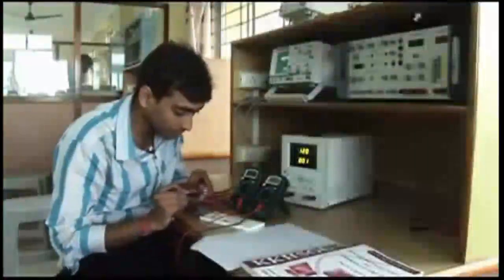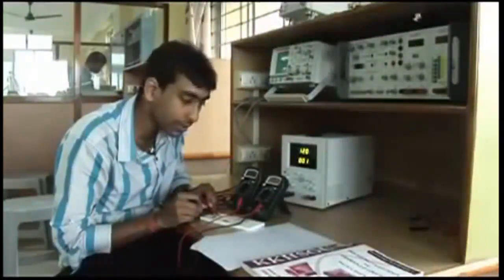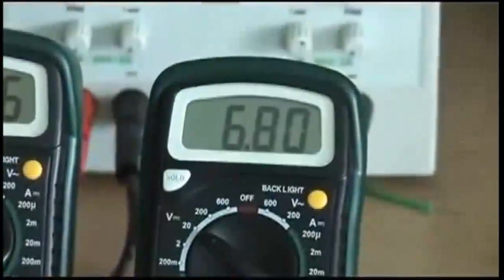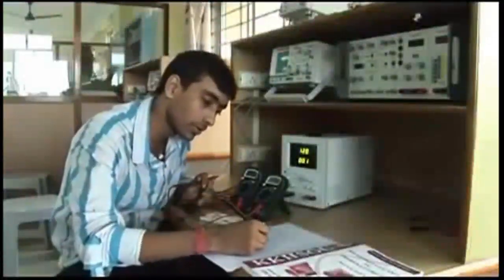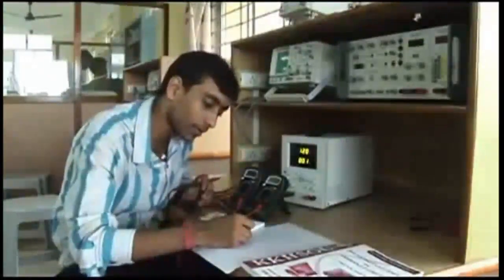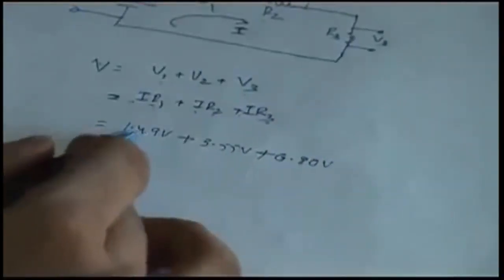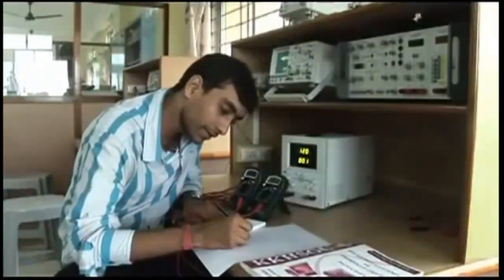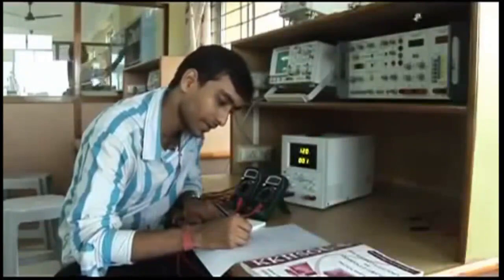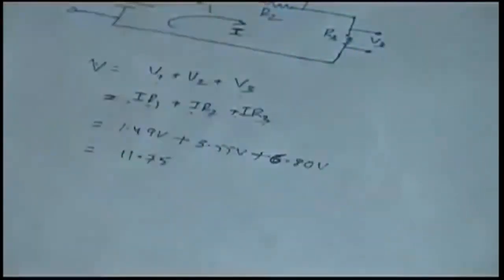Now for the third resistor, I am connecting the multimeter across it to measure the voltage drop. You can see on the multimeter that the voltage drop is 6.80 volts. So V3 equals 6.80 volts.